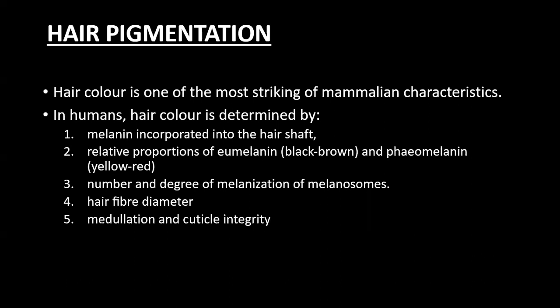Hair pigmentation — hair color is one of the most striking mammalian characters. In humans, hair color is determined by: the melanin incorporated into the hair shaft and the relative proportion of different types of melanin — either eumelanin, which stains the hair black or brown, or pheomelanin, which stains the hair yellow or red. Then the number and degree of melanization of the melanosomes, hair fiber diameter (thicker hairs are more pigmented), medullation, and cuticle integrity. If the cuticle is disrupted, hairs look lighter in color.